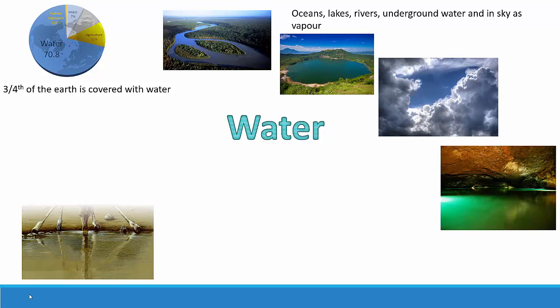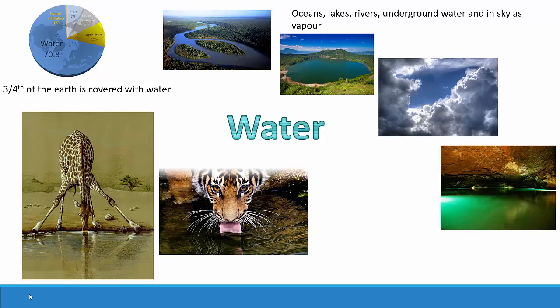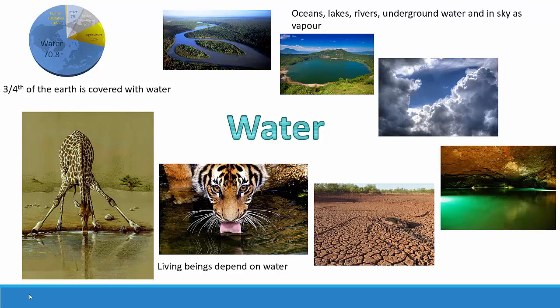In the sky, water is present as water vapor. We also know that all living beings depend on water in some way or another, and without water there can be no life on earth. If you take the simple example of blood — the blood that pumps in our body, which carries oxygen and food to different parts — is majorly made up of water.